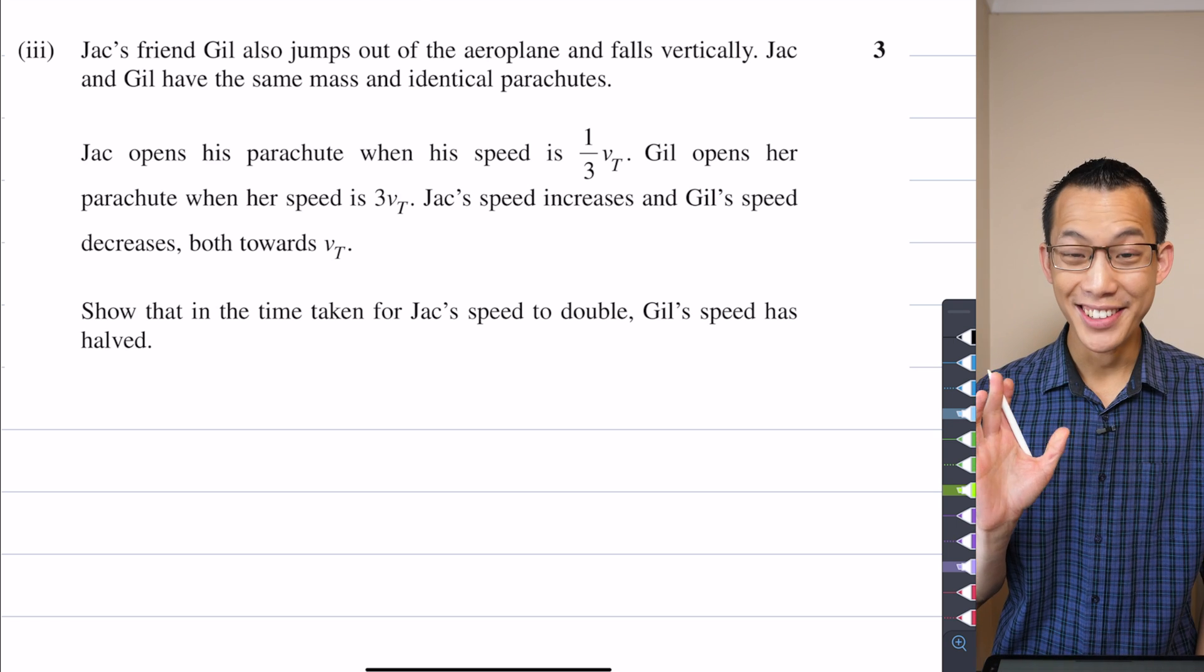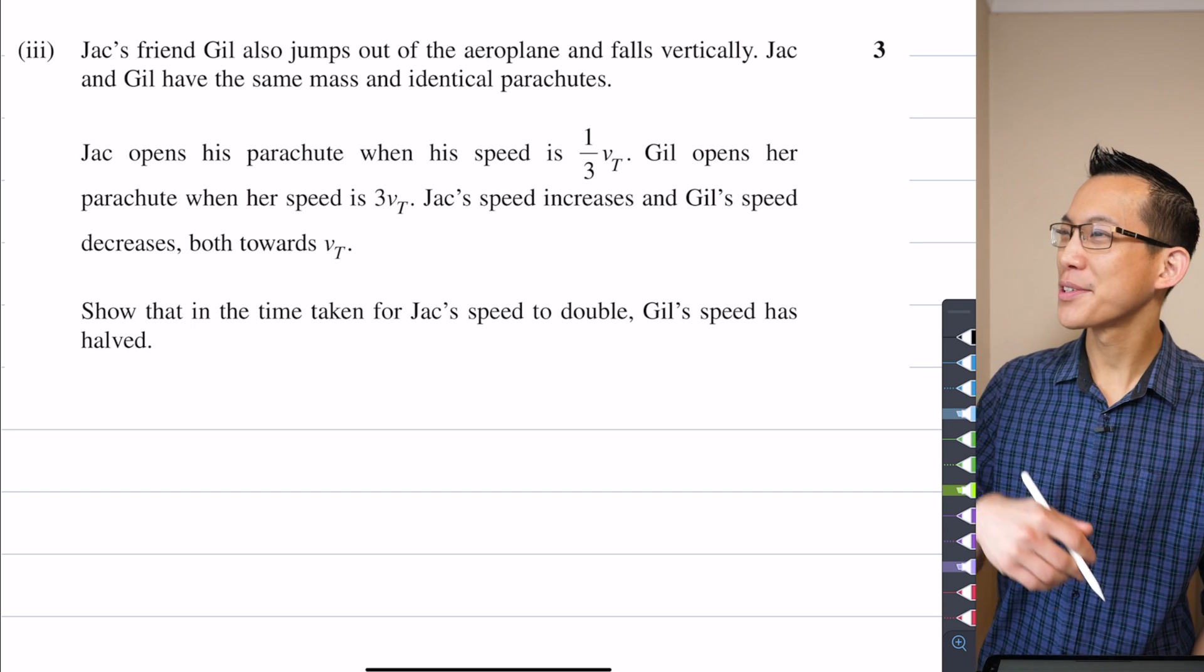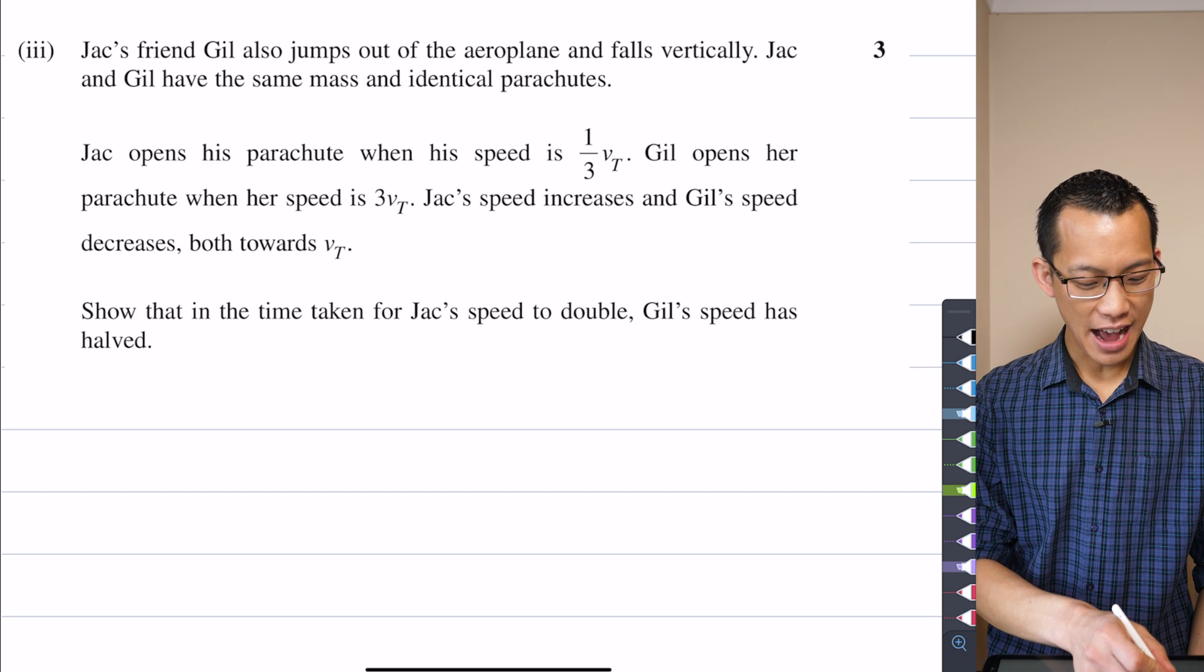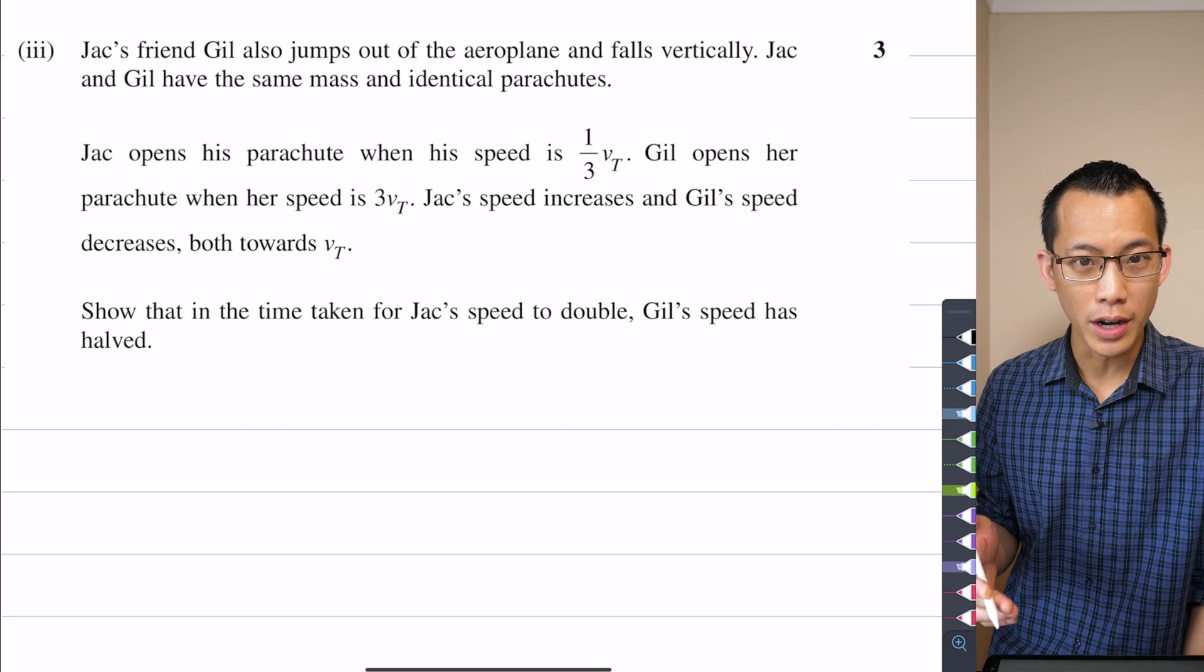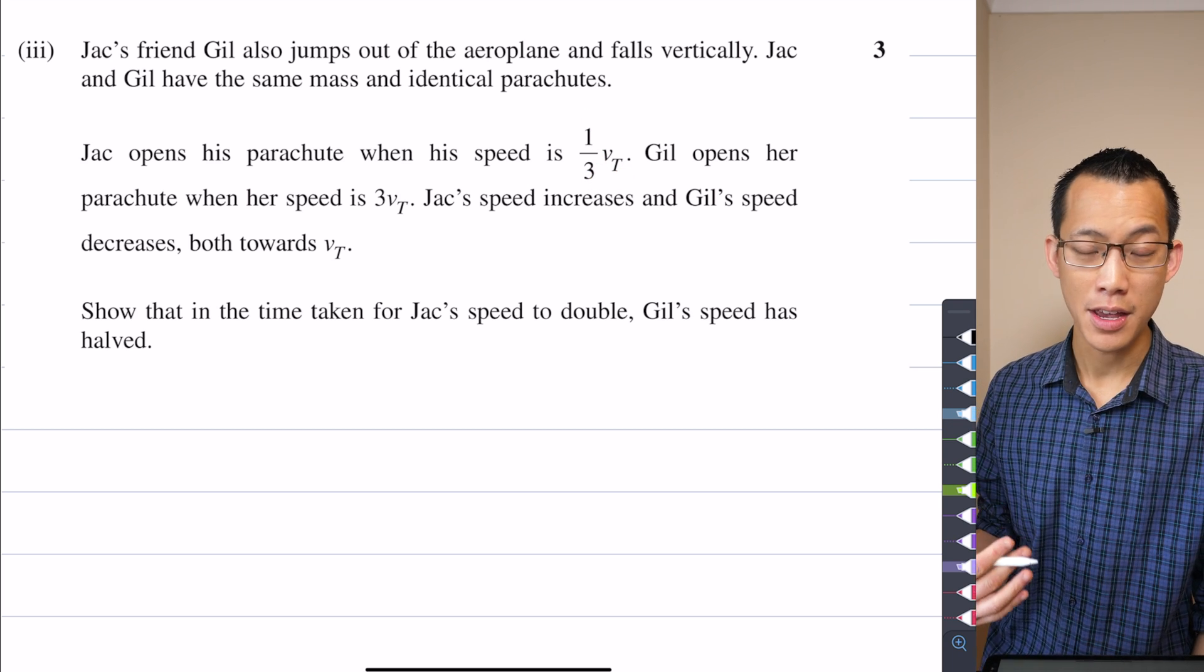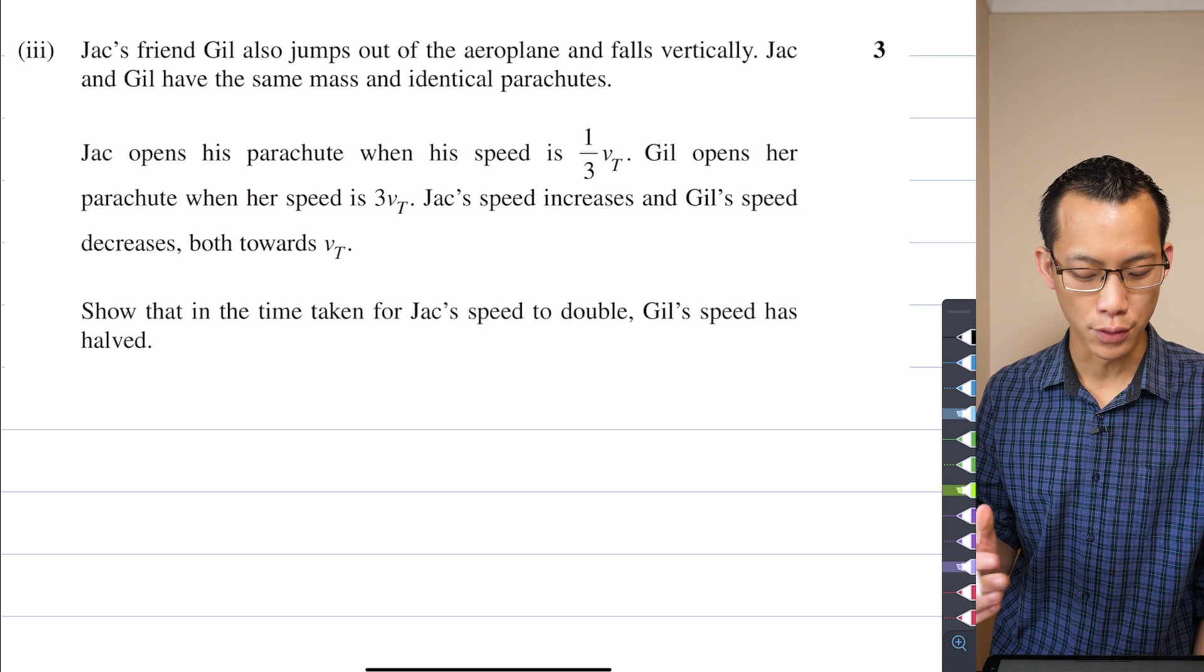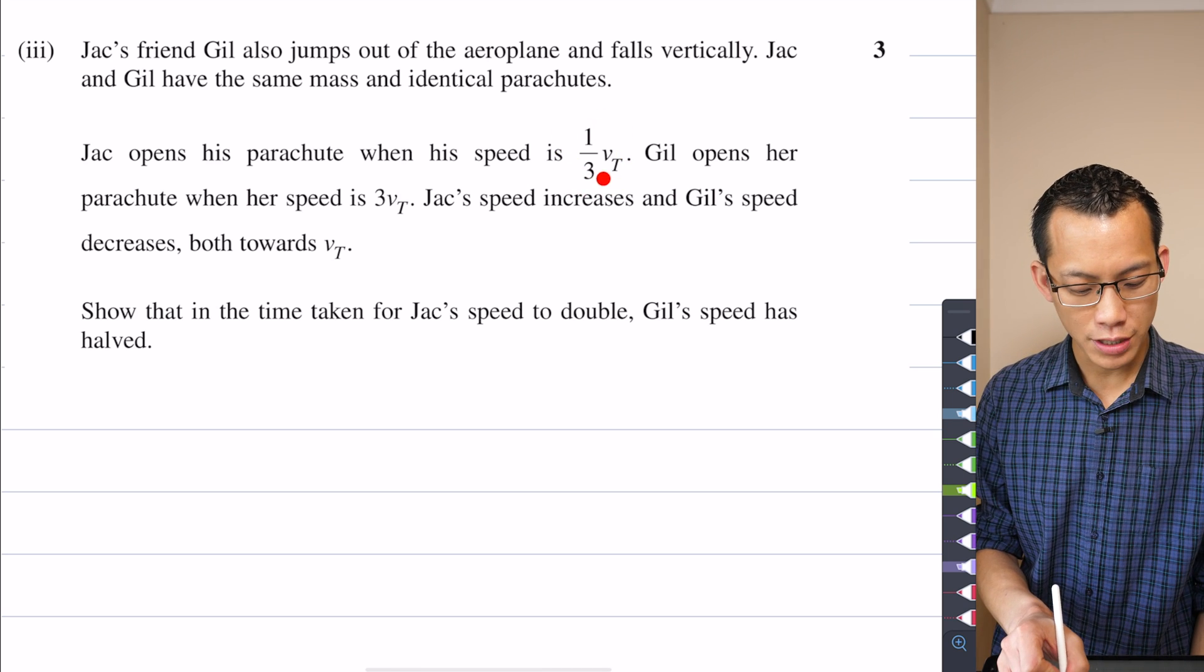but Jack is a little nervous, I guess, or maybe just wants to take in the scenery, so Jack opens the parachute very early at one-third of VT, so in other words Jack has not had much time to accelerate out of his fall. So he pulls his parachute at that time,